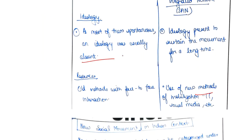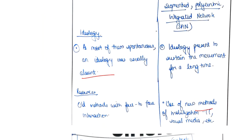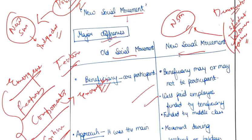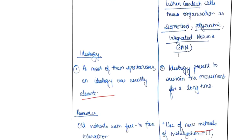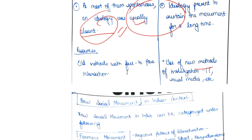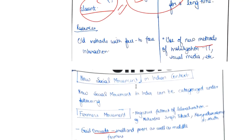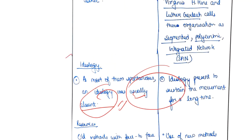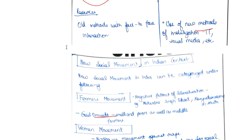Regarding the point that most new social movements are spontaneous and that ideology was absent — we can't conclusively say that ideology was absent in old social movements, so it is better to skip this point. The other points are good, but in this specific question, if you can rename this section it would be better aligned with the theme of the question.